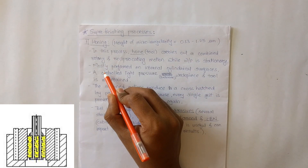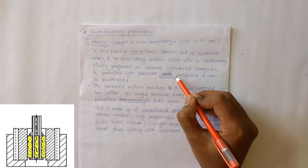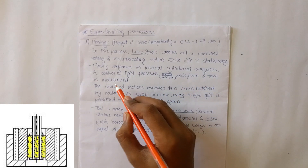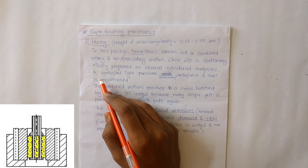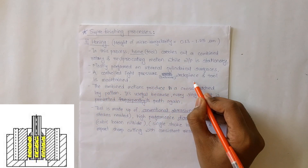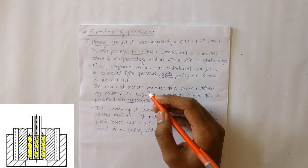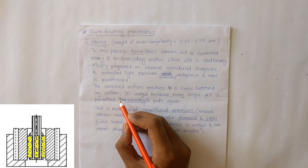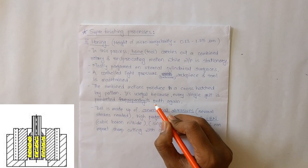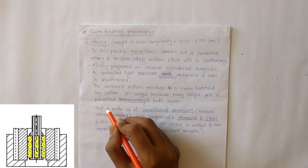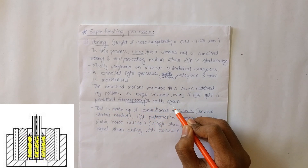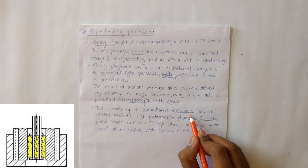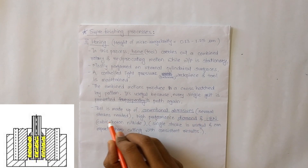Honing is mostly performed on internal cylindrical surfaces, like the cylinder of an IC engine. A controlled light pressure between the workpiece and tool is maintained. The combined motion produces a cross-hatched lay pattern, which is useful because every single grid is prevented from repeating its path.